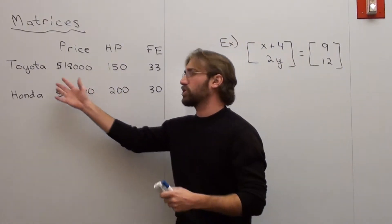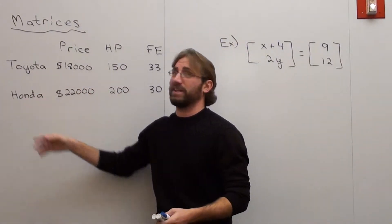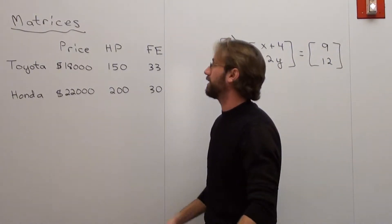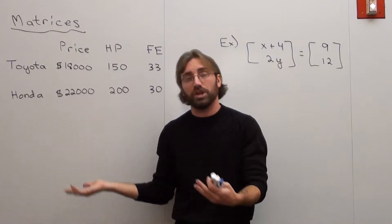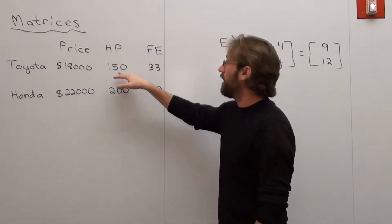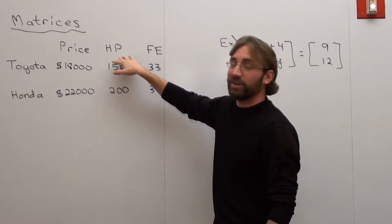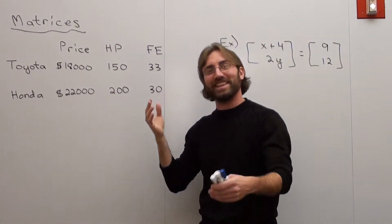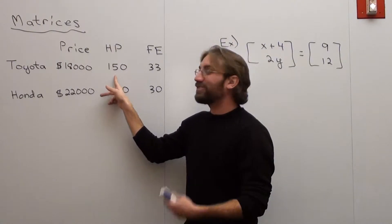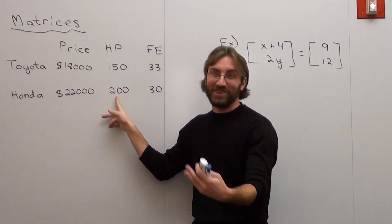So I've got this example right here where I'm shopping for a car. I'm shopping for a Toyota and a Honda. I just picked two cars arbitrarily. And I listed the price. One is $18,000 and one is $22,000. This stands for horsepower, not hit points for those role-playing fanatics. I can't believe I just said that. This one is 150 horsepower and this one is 200 horsepower.